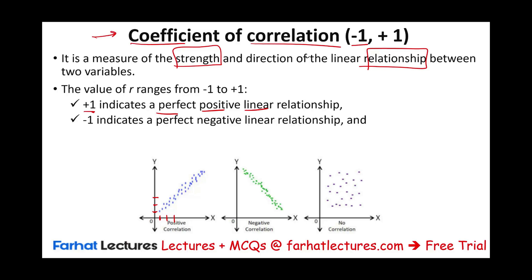Then the relationship could have a coefficient of correlation of negative one — the exact opposite — indicating a perfect negative linear relationship. The more marketing you do, the less your sales. Notice the line is sloping down: a perfect negative relationship.